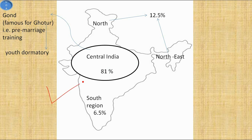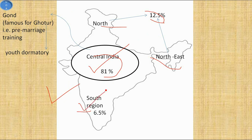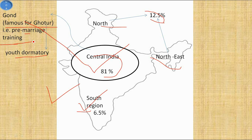This diagram shows the population distribution of tribes in India. In North and Northeast, around 12.5% of the tribal population lives. 81% of the tribal population lives in Central India, and 6.5% lives in the southern region. In Central India, there is a tribe known as Gond, famous for Ghaur — a pre-marriage training where youth are sent to a dormitory for pre-marriage life training, and if they pass, the marriage is successful.